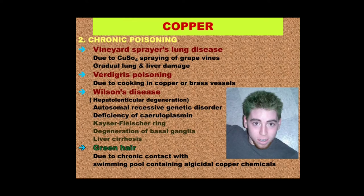Then there is verdigris poisoning, seen in individuals who eat food mainly cooked in copper or brass vessels. Brass is an alloy of copper and zinc, so when someone chronically eats food from such vessels, there is a possibility of copper poisoning, with manifestations more or less the same as seen in the case of other copper salts like copper sulfate.